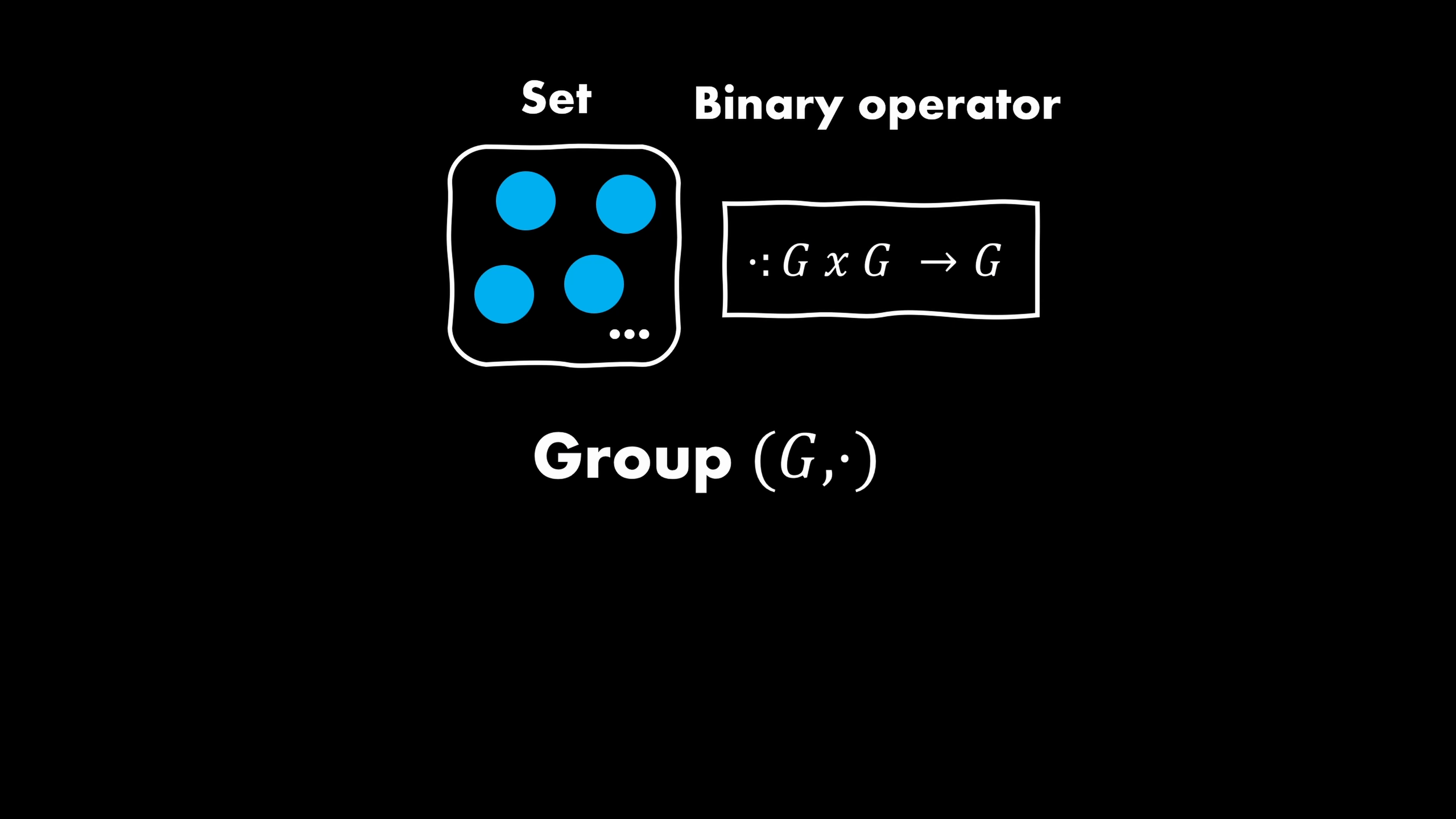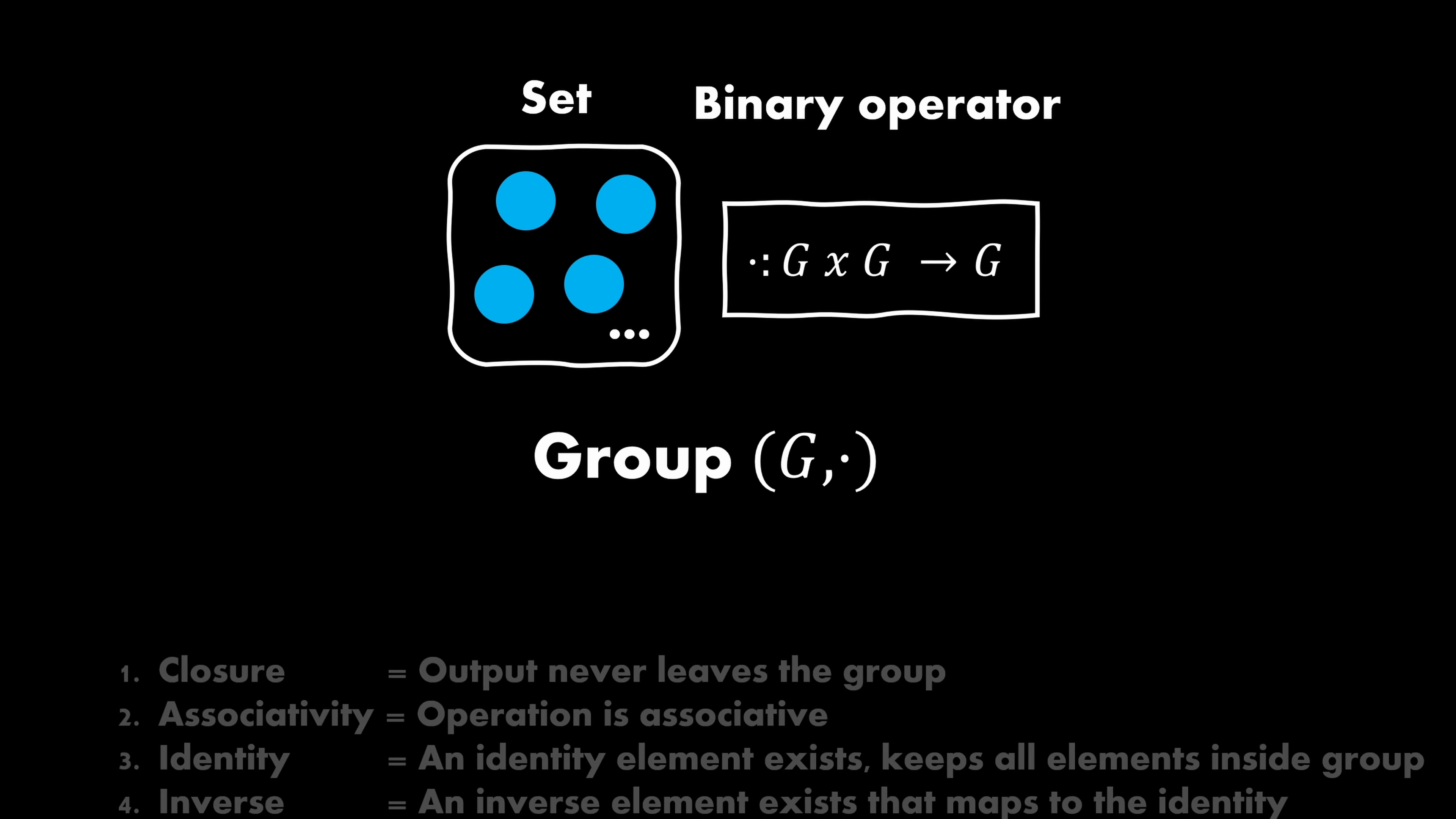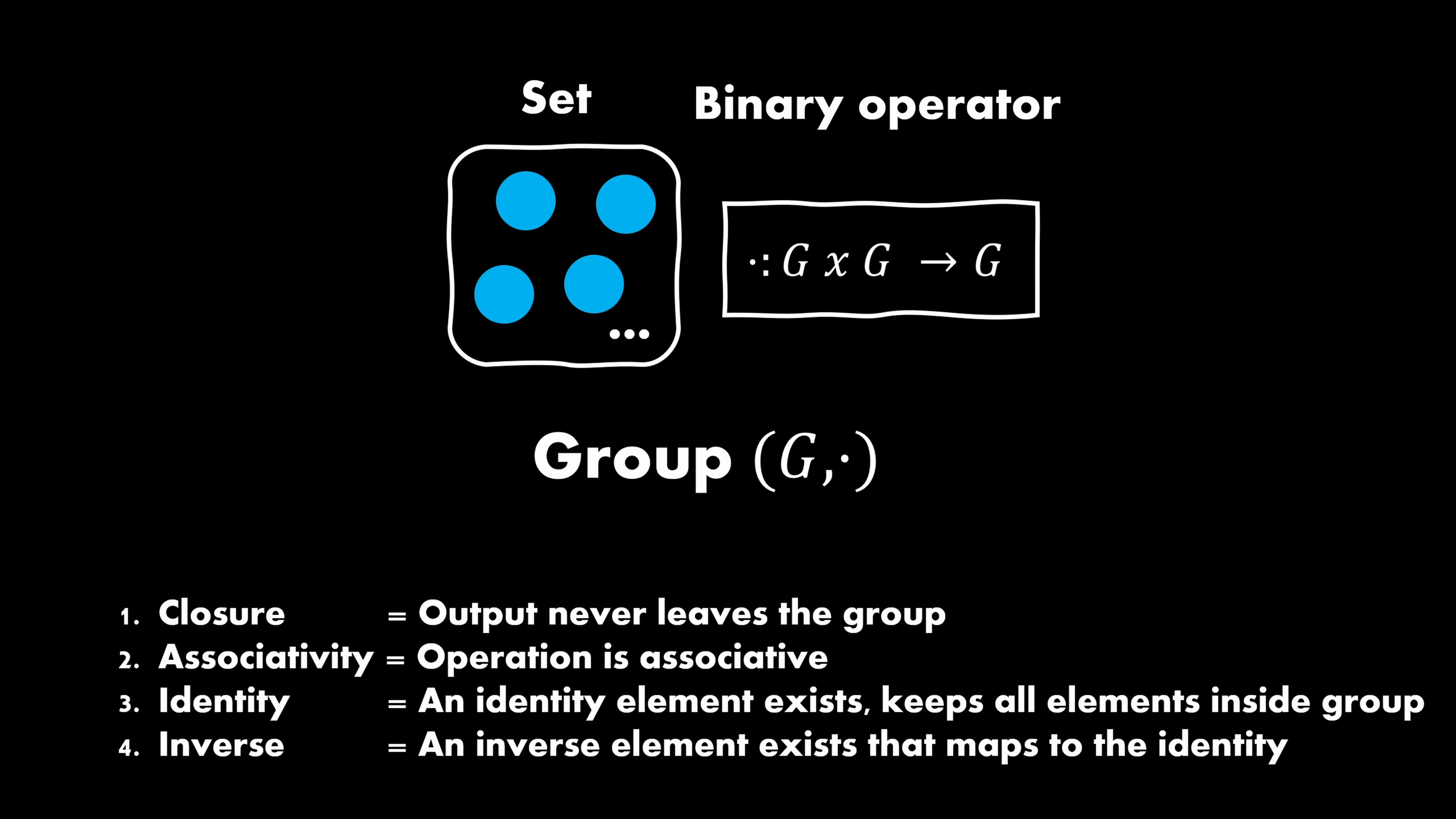A proper group of transformations needs to fulfill four properties, which I've added here in very simple language. Closure means that the result of some transformations never leaves the group, so it's another group member. For example, if you rotate by some degree, you will still arrive at some rotation that is also part of the group. Associativity means that the composition of elements can be grouped. Furthermore, an identity element needs to exist and there needs to be an inverse element that brings you back to the identity. I won't go further into detail regarding these definitions, but we'll quickly talk about a visual way how to check if some group is valid.